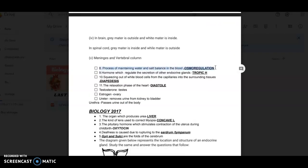Tropic hormone, the frequently asked question: hormone which regulates the secretion of other endocrine glands. Then squeezing out of white blood cells from the capillaries into the surrounding tissue, that is diapedesis. Then relaxation phase of the heart is diastole. And testosterone, you know it's present in testes. The hormone estrogen for ovary. Ureter removes urine from kidney to bladder. Urethra passes urine out of the body.